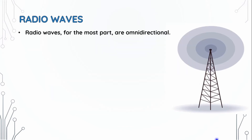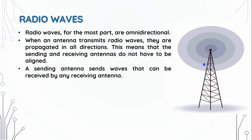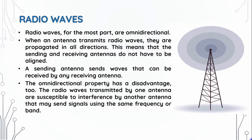Radio waves are by nature omnidirectional. When we send the signal to the antenna, we send the signal as a wave. When we send data, we don't need a specifically directed receiver antenna. This is the omnidirectional antenna, and this supports multicasting — sending from one sender to multiple receivers.